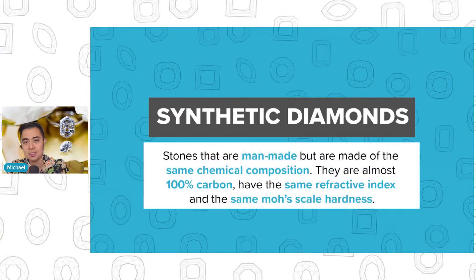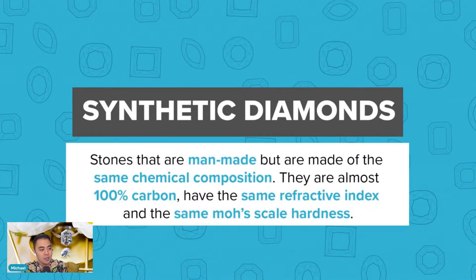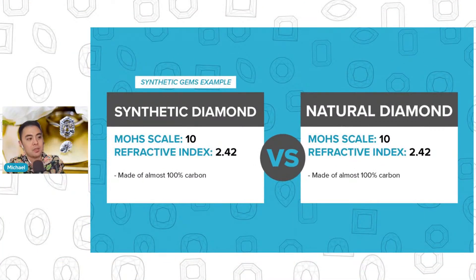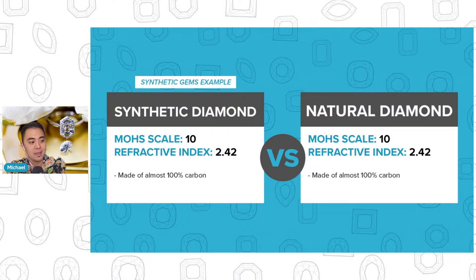So what's the difference between that and the synthetic diamond? Isn't it the same thing? This is where most people get confused — it is not the same thing. A synthetic diamond are stones that are man-made, but are made of the same exact identical chemical composition. They are almost 100% carbon, have the same refractive index and the same Mohs scale hardness. The synthetic diamond has the same Mohs scale as the natural diamond — 10 out of 10 — the same refractive index of 2.42, and it's also both made of 100% carbon.